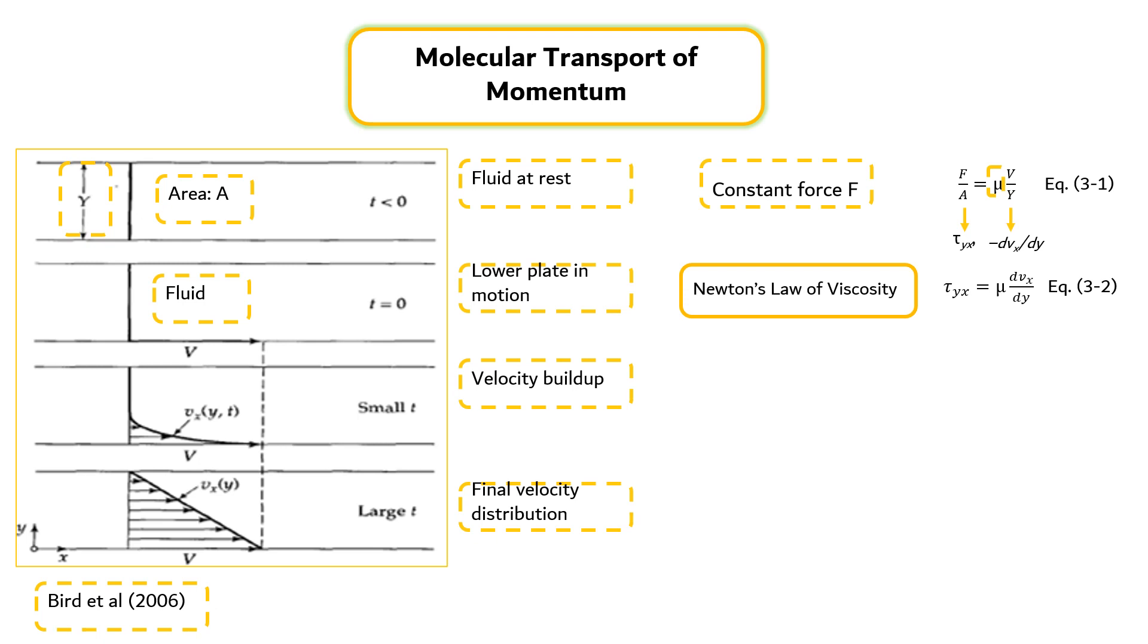In the neighborhood of the moving solid surface at y equals zero, the fluid acquires a certain amount of x-momentum. This fluid, in turn, imparts momentum to the adjacent layer of liquid, causing it to remain in motion in the x-direction. Hence, x-momentum is being transmitted through the fluid in the positive y-direction. Therefore, tau_yx may also be interpreted as the flux of x-momentum in the positive y-direction,